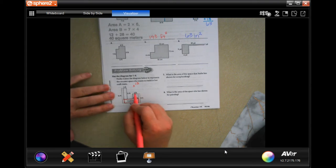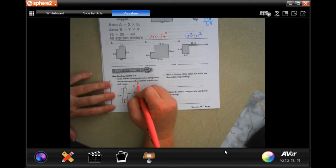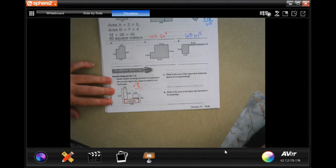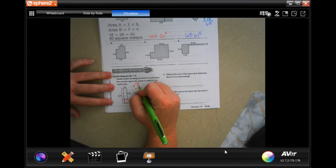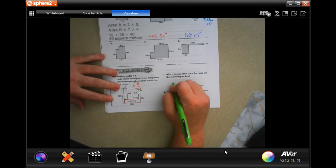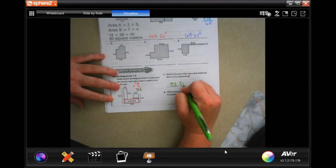So it's going to be 13 times 4. So 4 times 3 is 12, carry the 1, 4 times 1 is 4 plus 1 is 5. So 52, you can write feet squared if you want or square feet if you want. I'm going to write feet with an exponent of 2.